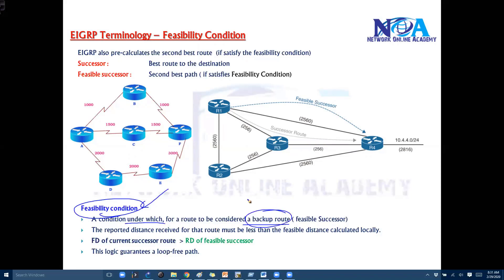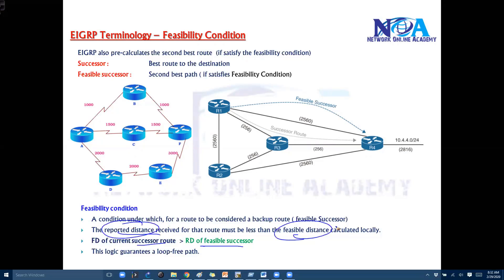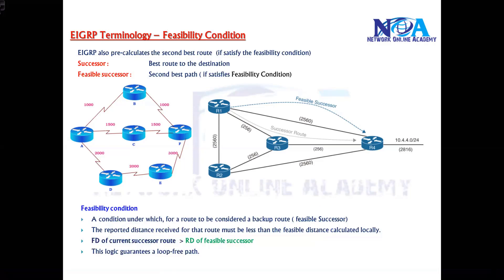The condition determines whether a candidate second best route should actually be considered as one or not. The condition states that the FD value of the successor route should be greater than the RD value of the feasible successor. This means that the reported distance you are receiving should be less than the feasible distance calculated locally. This actually guarantees a loop-free path.